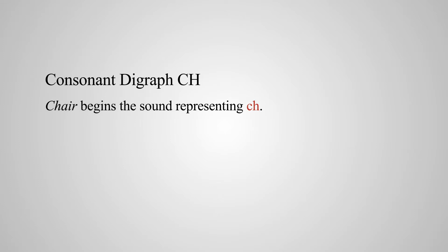We're on page 49: consonant digraph CH. Chair begins with the sound representing CH. Say each word twice and underline the CH. Number one: chill. Number two: child. Number three: match. The CH is at the end of match, and church is one where CH is at both the beginning and the end of the word.